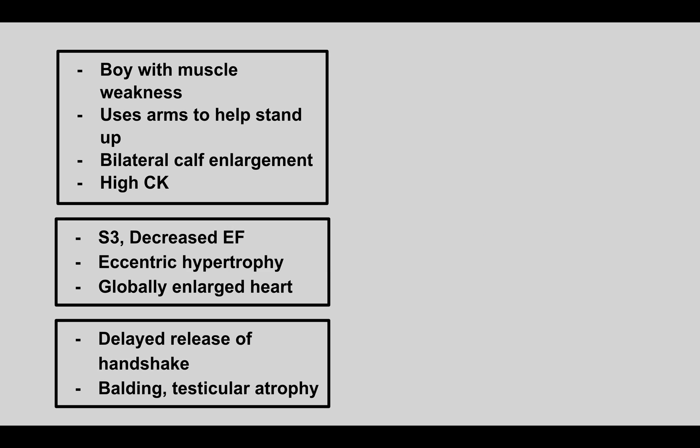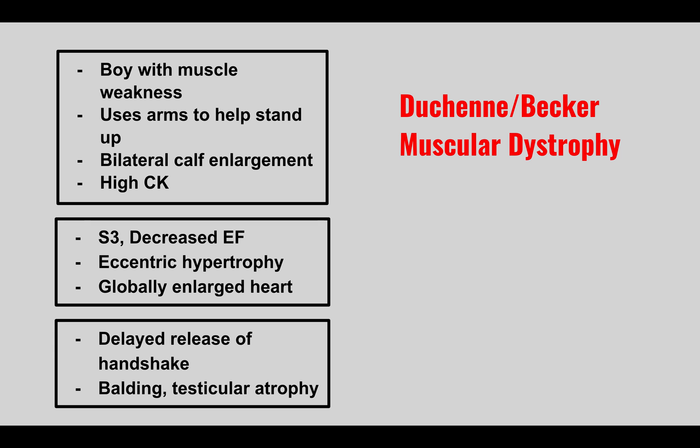The next condition: a boy with muscle weakness who uses his arms to stand up, bilateral calf enlargement, and a high creatine kinase level. This is Duchenne or Becker muscular dystrophy. The key difference is that Duchenne has a complete deletion of the dystrophin protein versus Becker has a decreased dystrophin protein. A common cause of death is dilated cardiomyopathy — with S3, decreased ejection fraction, eccentric hypertrophy, and a globally enlarged heart — because their hearts become very weak.